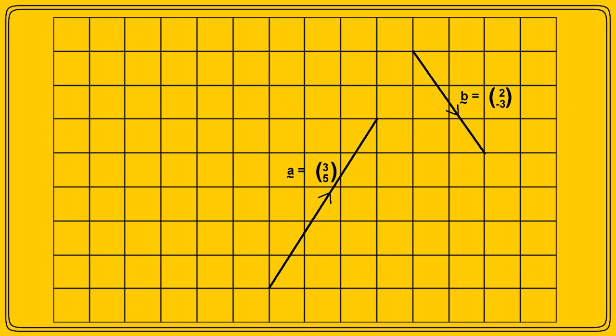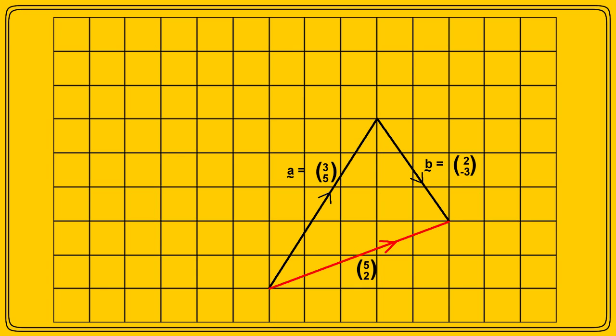Probably the simplest thing we can do with these is to add them. We do this by moving the beginning of the second vector to the end of the first vector — that's the high road. The resultant vector, the low road, is from the beginning of vector A to the end of vector B. By counting squares, we can see this is the vector 5 over 2, which is exactly what we get if we simply add the X components and the Y components: 3 over 5 plus 2 over minus 3 is 5 over 2.